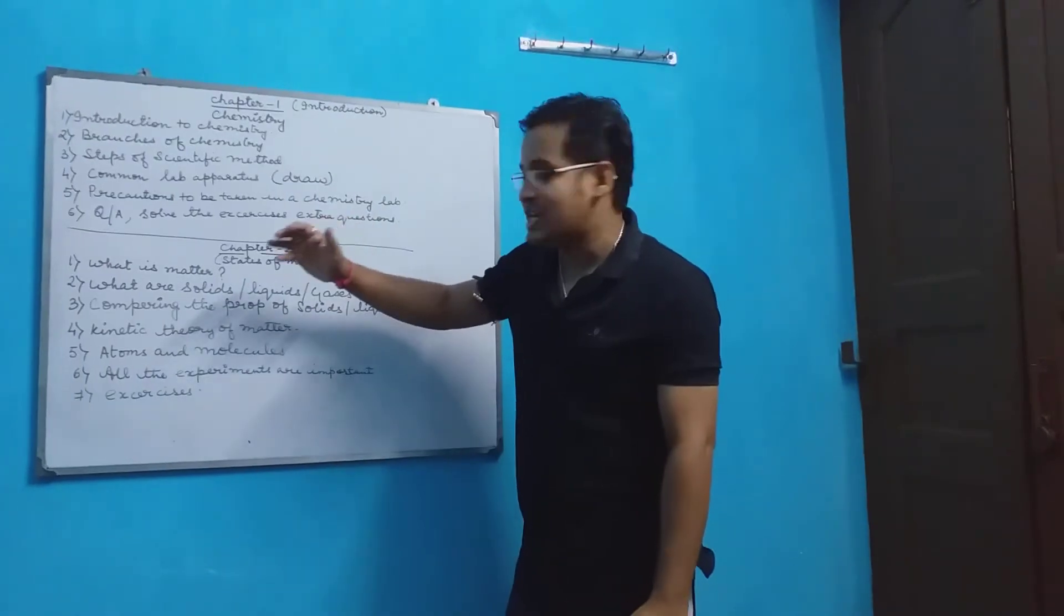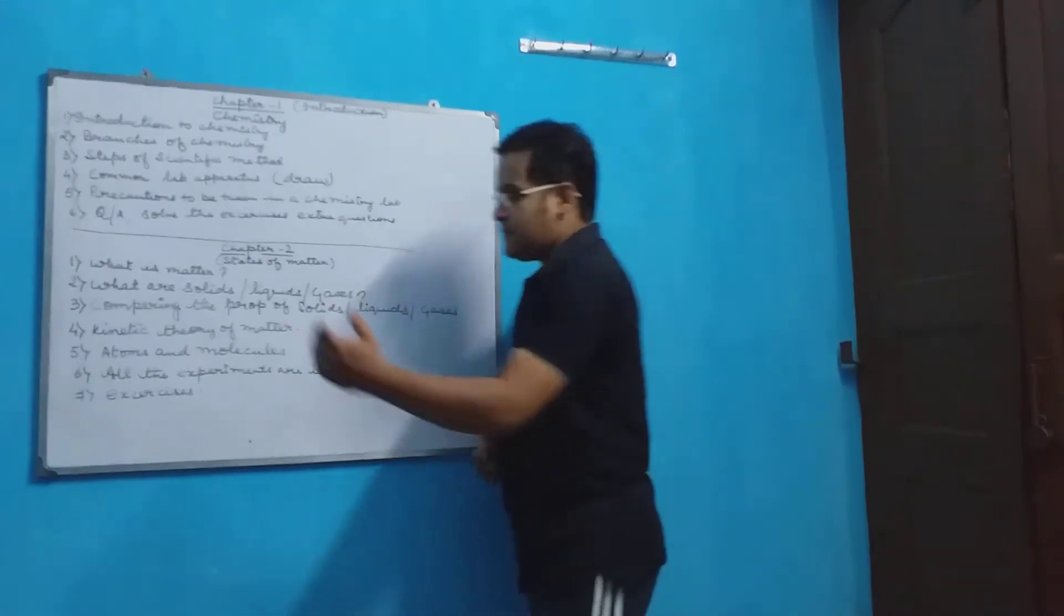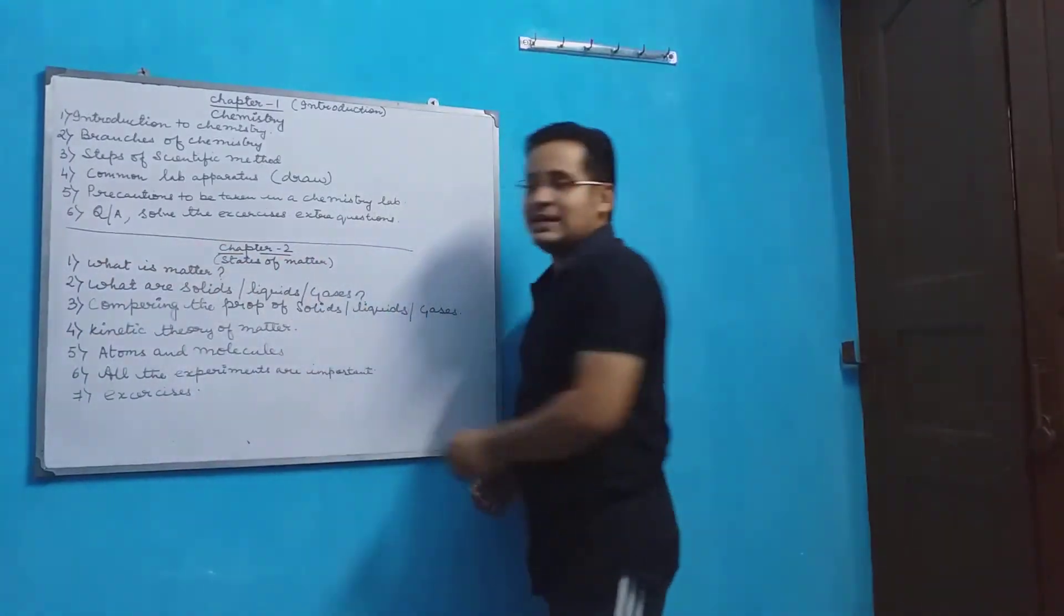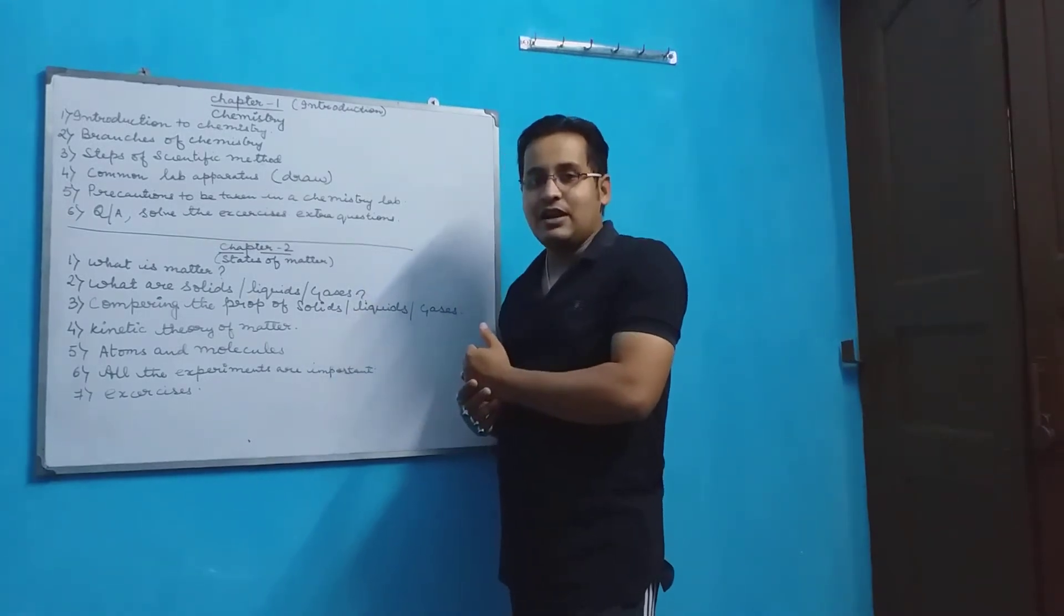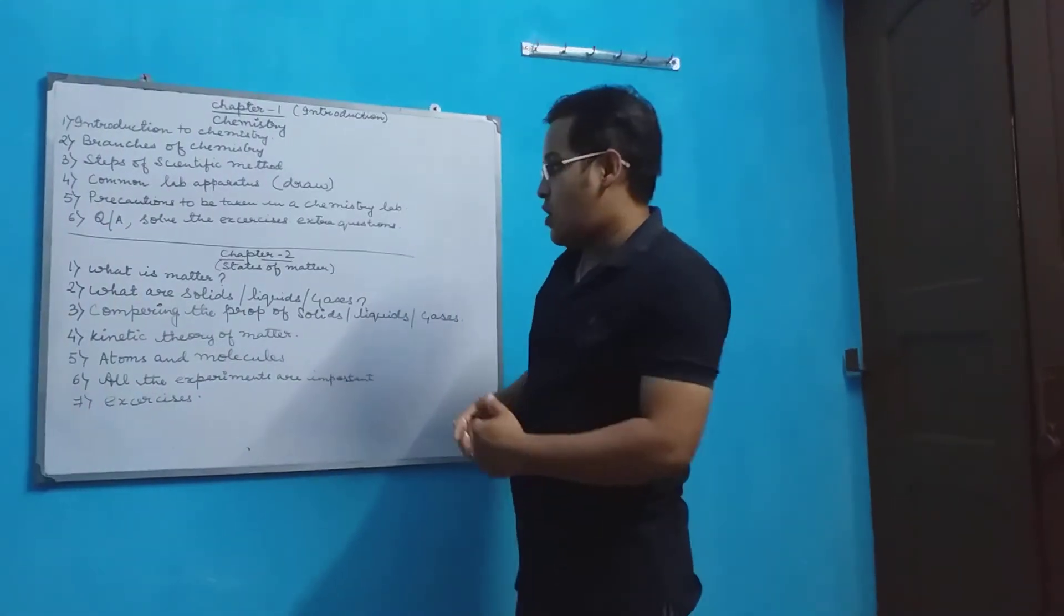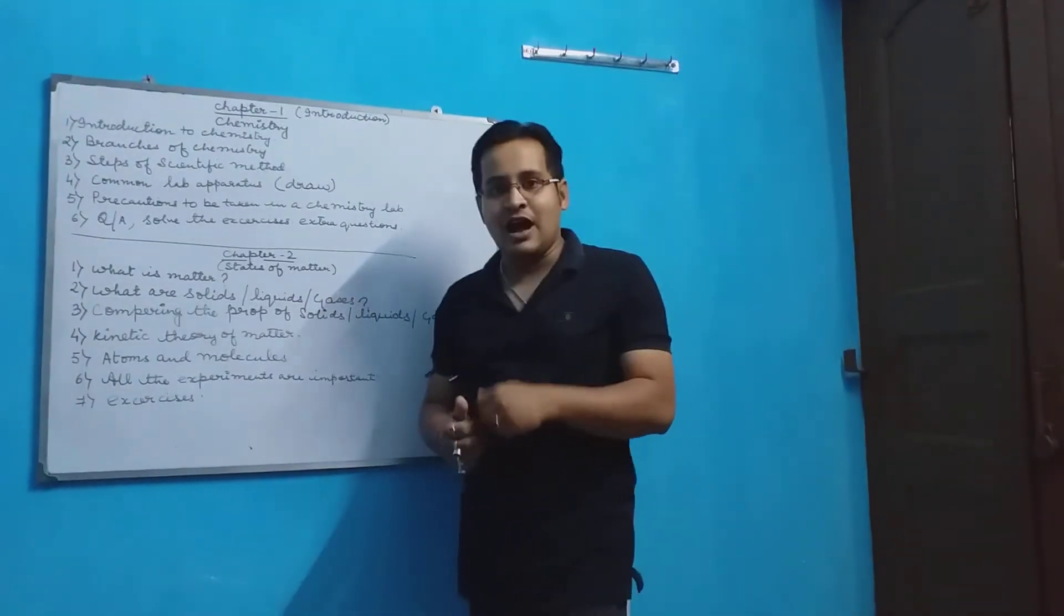Now let us come to chapter 2, states of matter. The first question that arises is what is actually matter? Matter is something that occupies space and has weight. What are solids, liquids and gases? The three forms of matter are what?